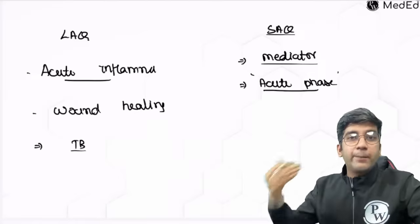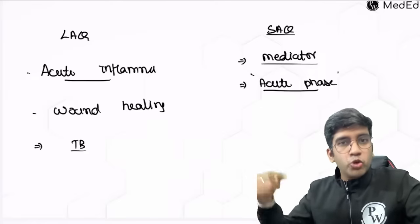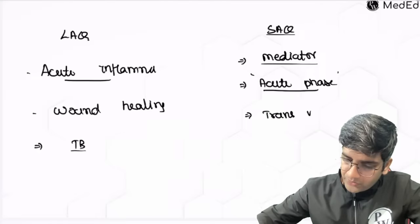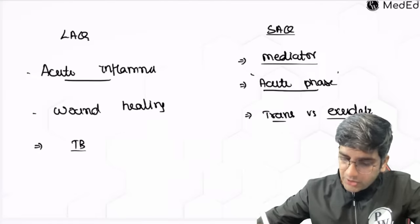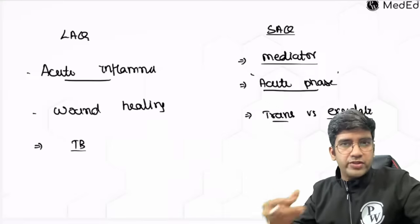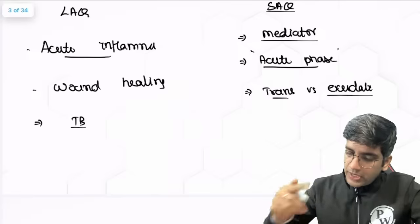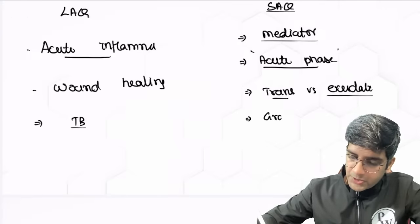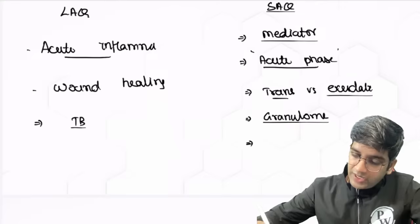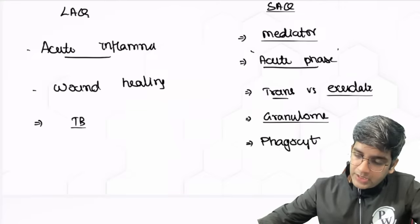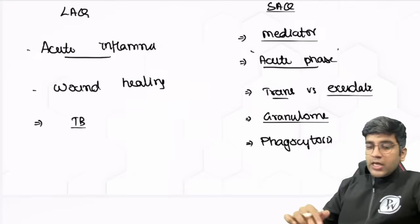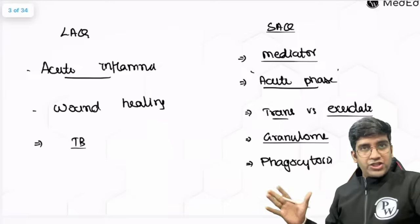Acute phase reactants has lots of application in real life medicine — as a doctor you will be writing ESR and CRP investigations. Then transudate versus exudate — there is a high possibility this can come as a two-mark question or in a viva. Granuloma formation and different types of granuloma is also a very good source for a short answer question. You can be asked about the entire process of phagocytosis, which is important for an undergraduate because that is the starting point. This is an overview of what can come in the inflammation and infarction chapter.